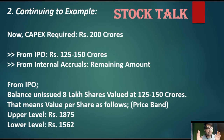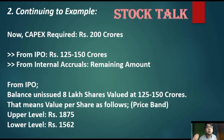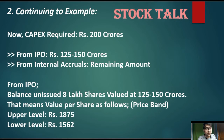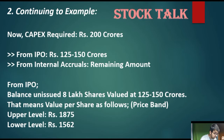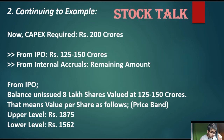Now, regarding the capex requirement: suppose the company has a capex need of 200 crore rupees. The company has 8 lakh shares not yet issued, which it plans to offer to the public. The business valuation is estimated between 125 crore rupees on the lower side and 150 crore rupees on the higher side. Dividing the valuation by 8 lakh shares gives a per-share value of approximately 1,562 rupees at the lower limit and 1,875 rupees at the upper limit. This range of 1,562 to 1,875 forms the price band.